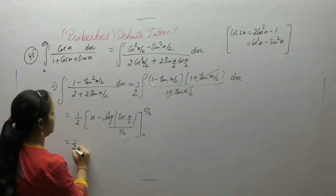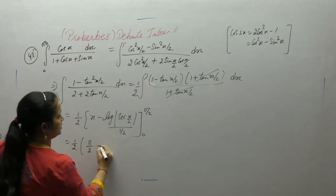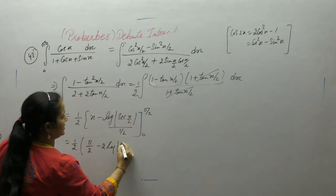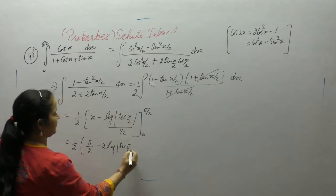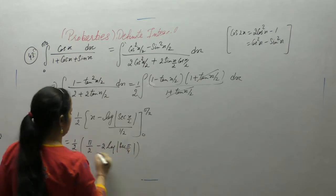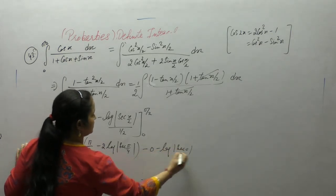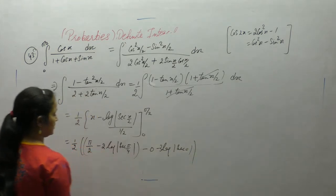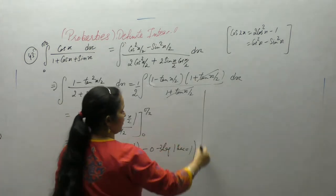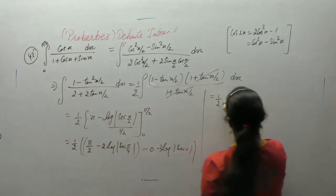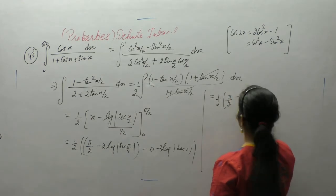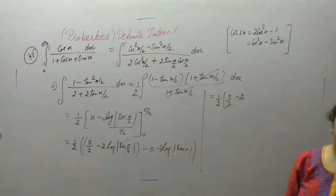1 by 2, pi by 2, sec pi by 4 minus 0 minus log sec 0. Cos 0 is 1. 1 by 2, pi by 2 minus 2. Cos pi by 4 is 1 by root 2.